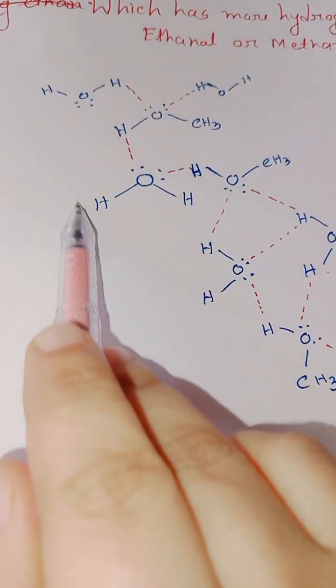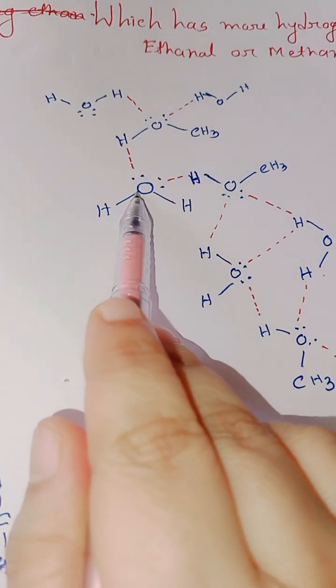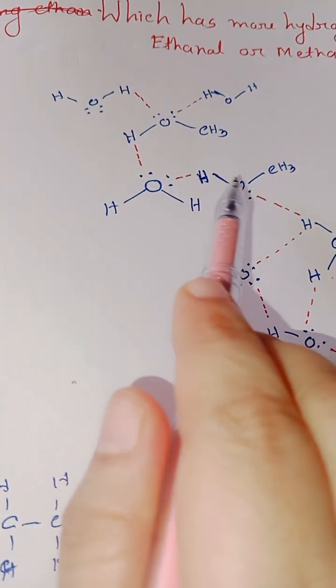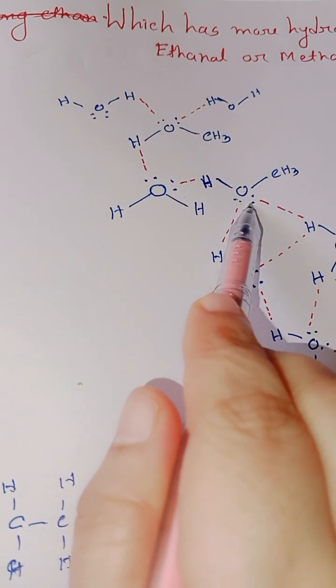Similarly, look into the structure of water molecules. This oxygen has two lone pairs, so it will make two hydrogen bonds with two methanol molecules.